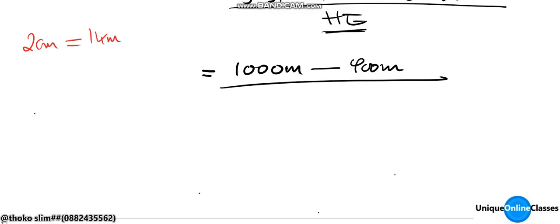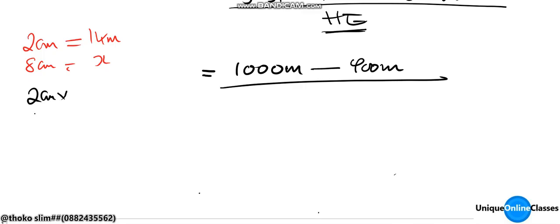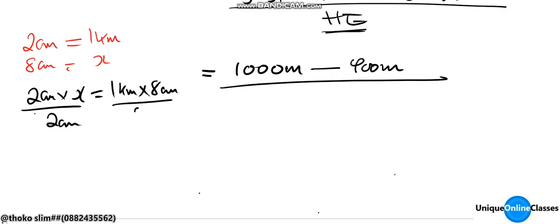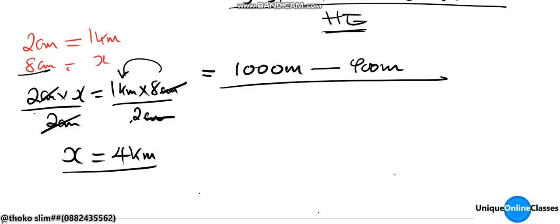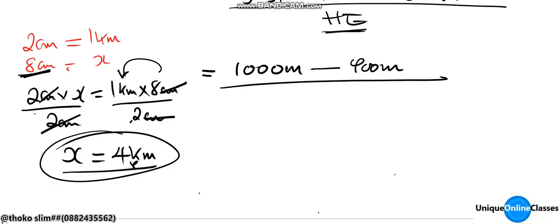The map scale shows that 2 centimeters represents 1 kilometer. The distance between P and Q is 8 centimeters, so we need to find how many kilometers that represents. Cross-multiplying: 2 cm × x = 1 km × 8 cm, so x = 8 ÷ 2 = 4 kilometers. That means the horizontal equivalent is 4 kilometers.